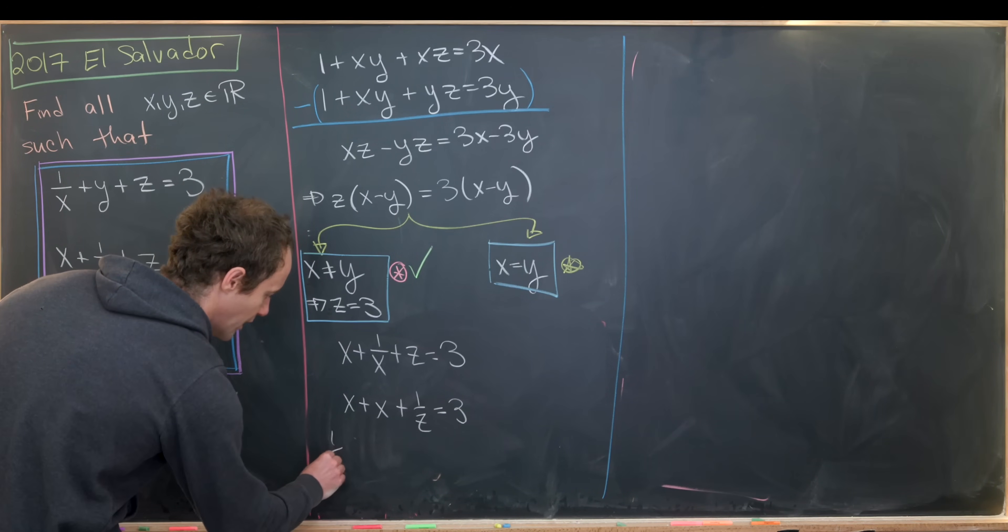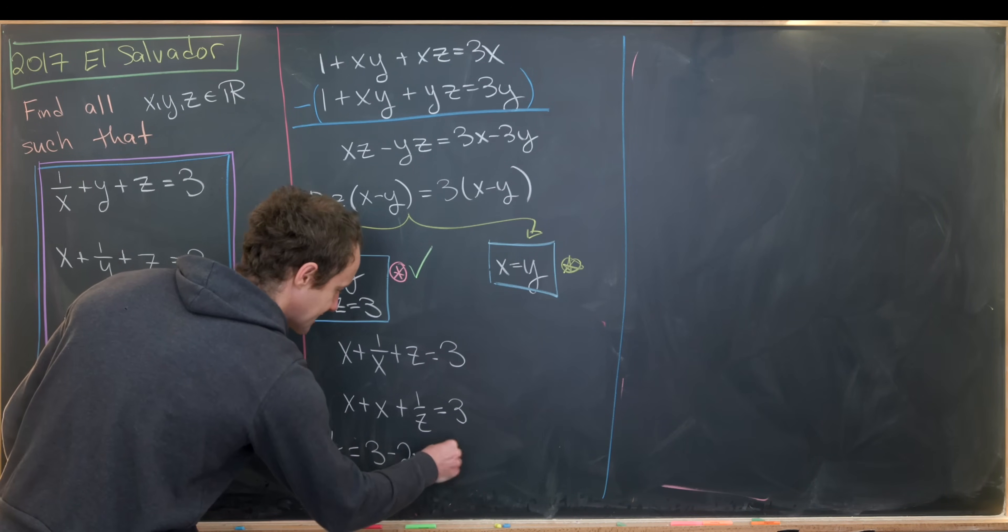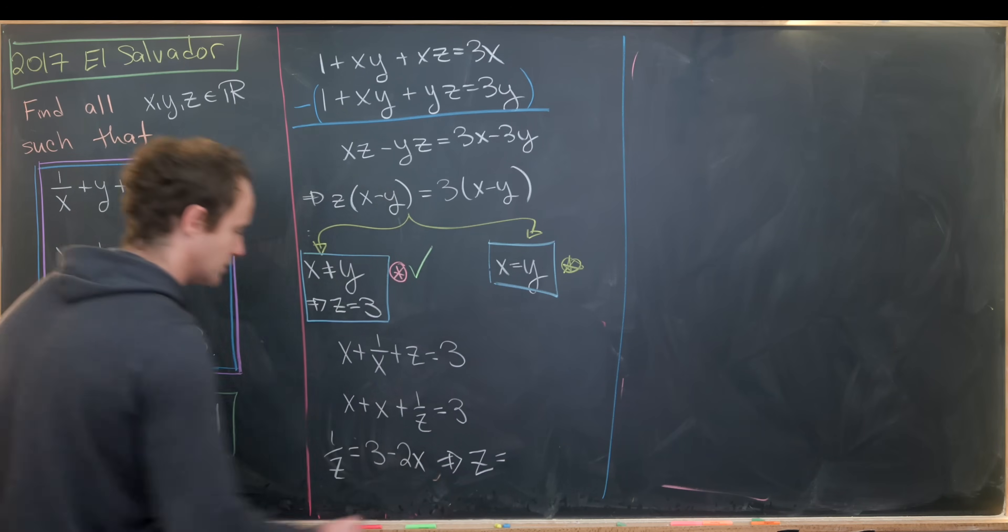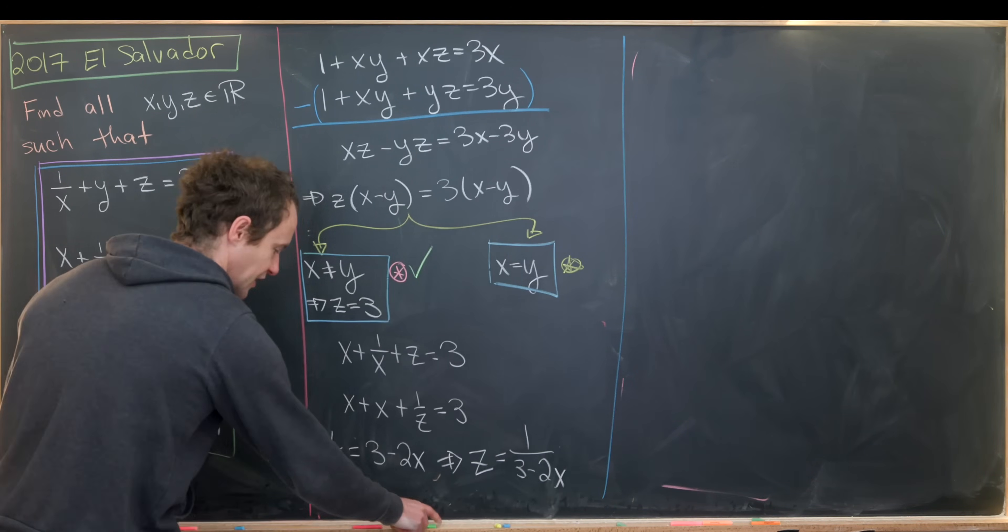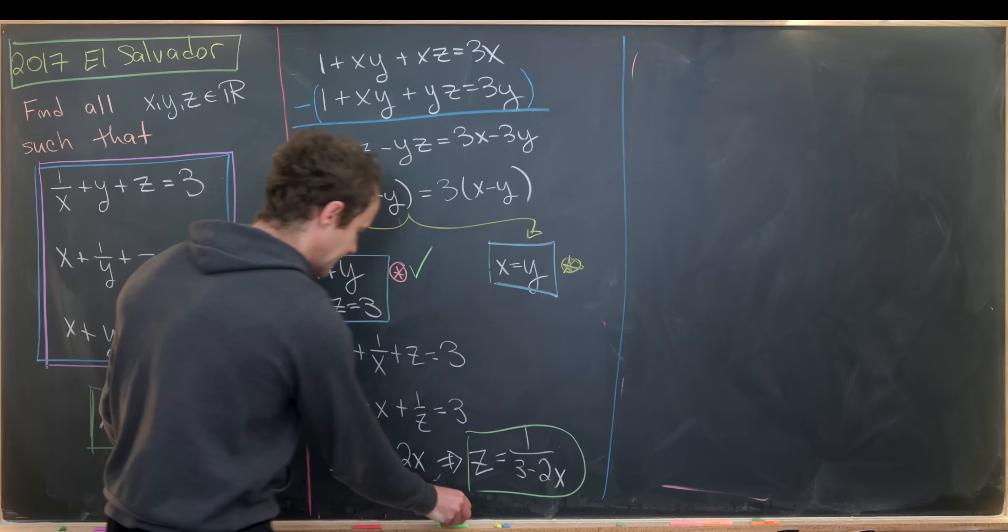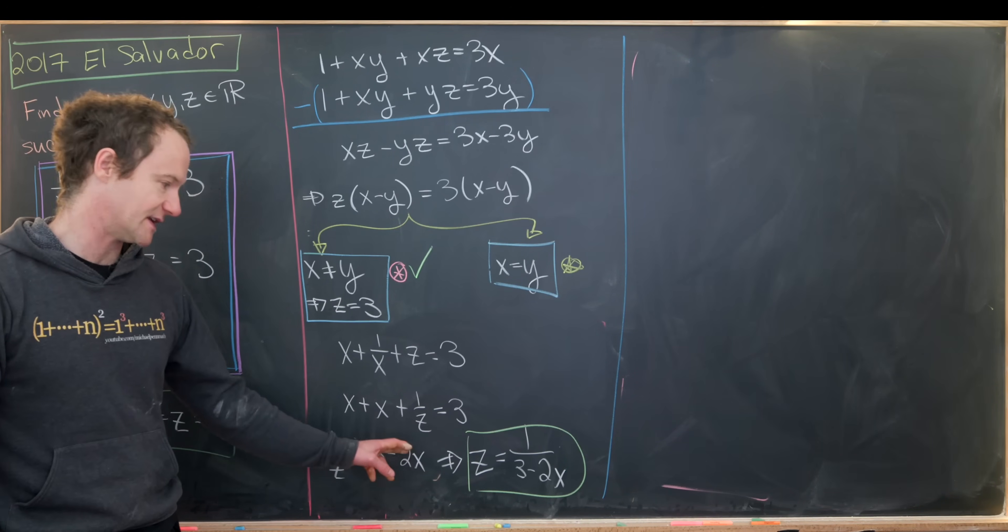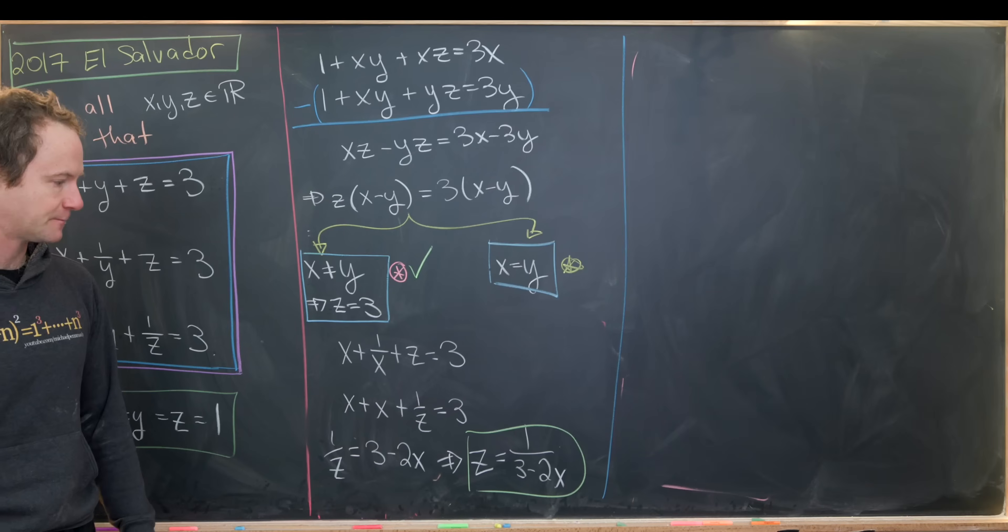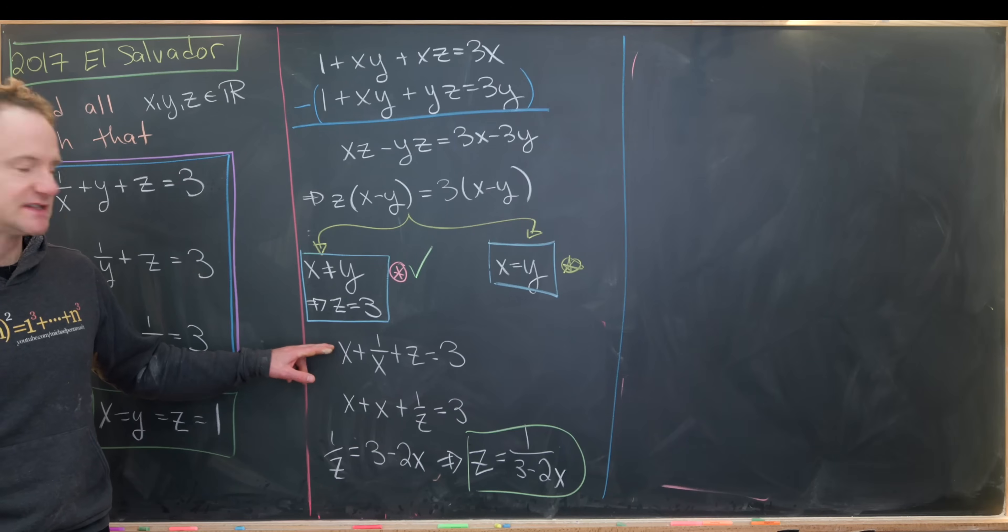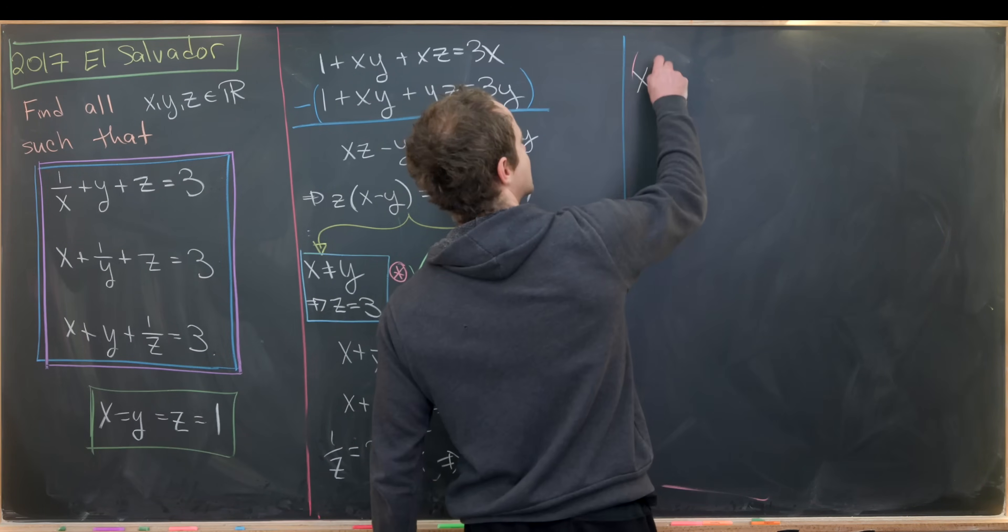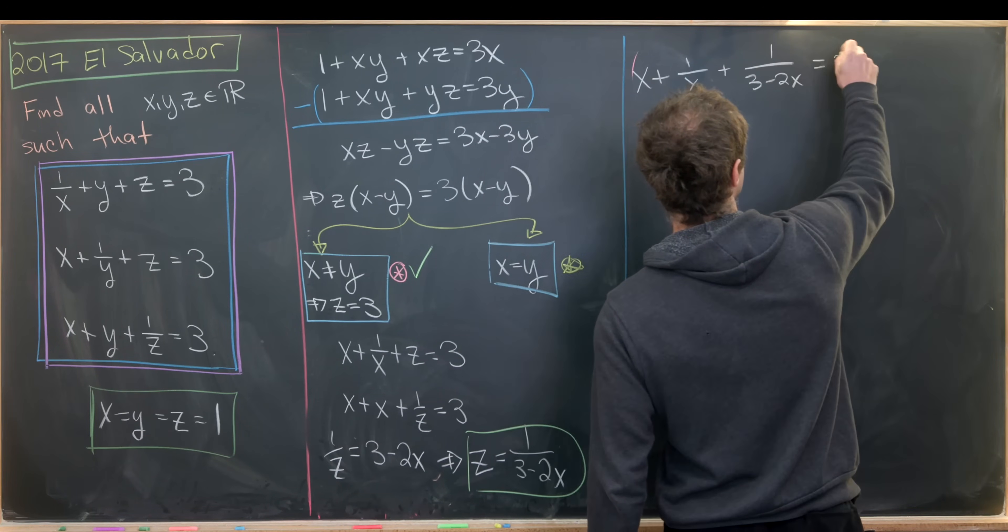Now notice this tells us that 1 over z equals 3 minus 2x, which tells us that z is equal to 1 over 3 minus 2x. You might be worried about dividing by that, but it's pretty clear that this 1 over z term is not 0. So since this 1 over z term is not 0, this right hand side is not 0, so we're allowed to put it in the denominator. Now that we've got this value for z, let's plug that right here and see what equation we get out of that.